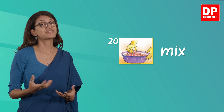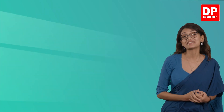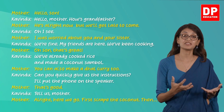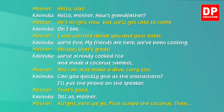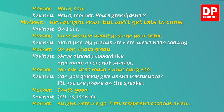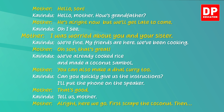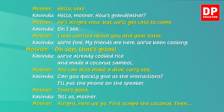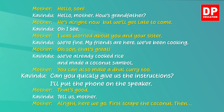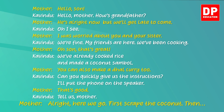Now let's read the dialogue that follows on page 88 in your pupils' book — it's a telephone conversation between Kamindu and his mother. Mother calls home: 'Hello son.' 'Hello mother, how's grandfather?' 'He's all right now but we'll get late to come.' 'Oh I see, I was worried about you and your sister.' 'We are fine, my friends are here, we've been cooking.' 'Oh son, that's great. We've already cooked rice and made a coconut sambal. You can make a dal curry too. Can you quickly give us the instructions? I put the phone on speaker.' 'That's good, tell us mother.' 'All right, here we go — first, scrape the coconut...' Then the conversation ends abruptly in your book, but we can complete it.